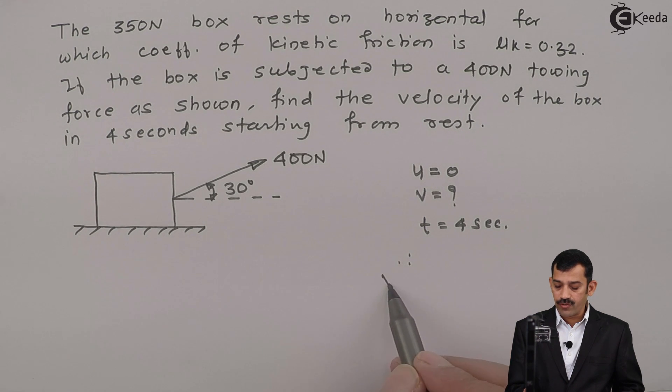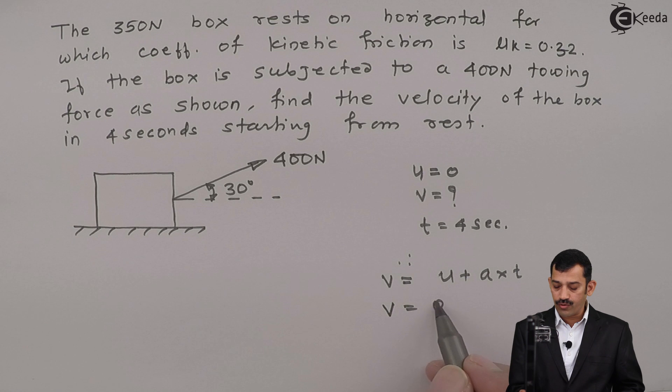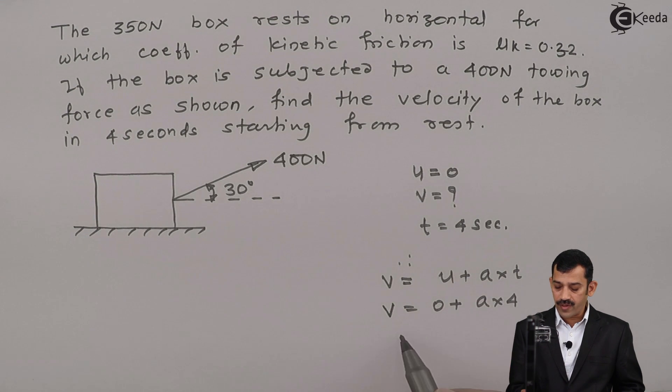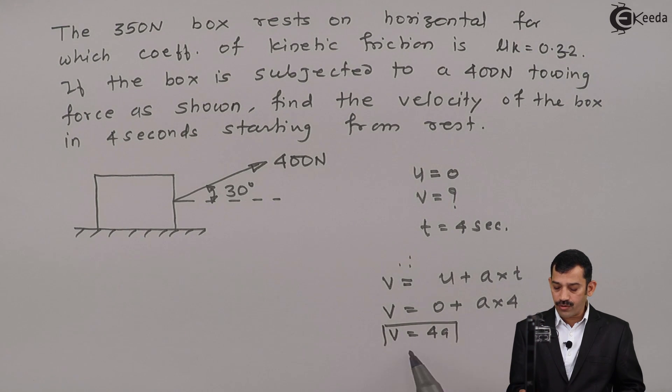Therefore, using this equation, v equal to u plus a into t. That means velocity equal to u plus acceleration into 4. That means velocity equal to 4a. That means what you have to do now?